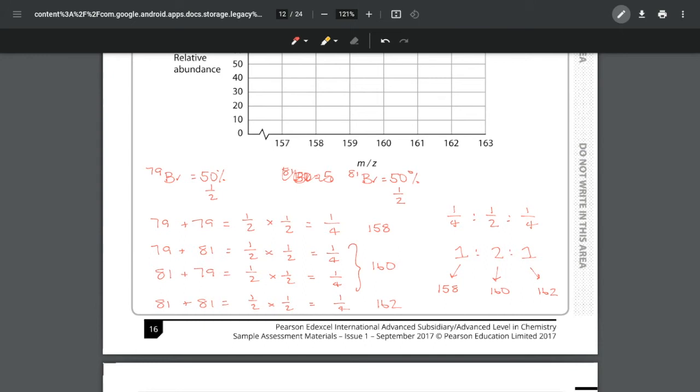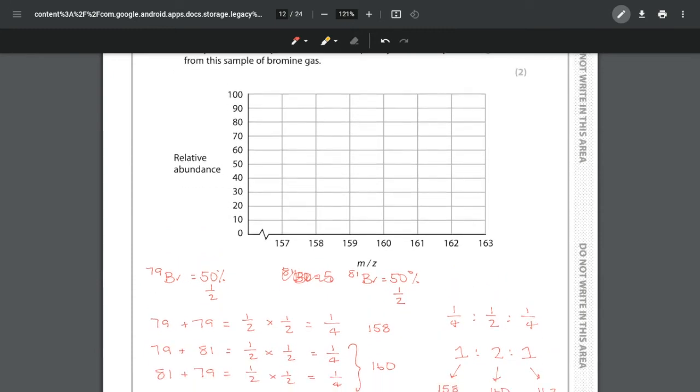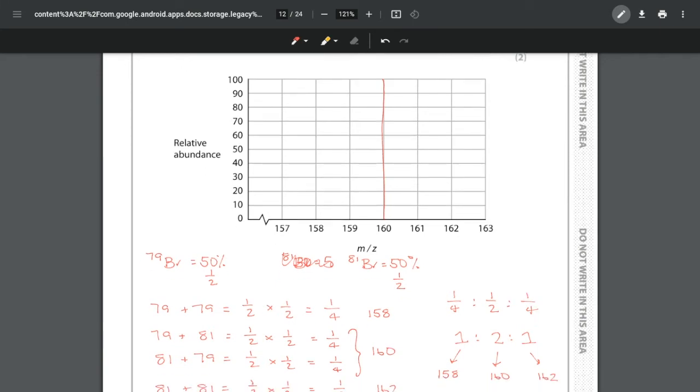We've got peaks at 158, 160, and 162. As long as the middle peak at 160 is twice the size of the other two peaks, you will get the mark. To make it easy for yourself, have the peaks go all the way up to 100. If we set the 160 as 100, our 158 and 162 are going to be half of that, so they're only going to go up to 50.